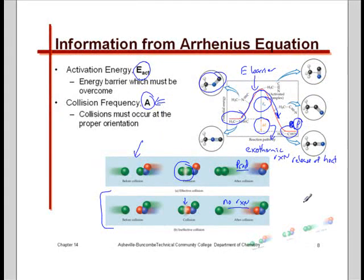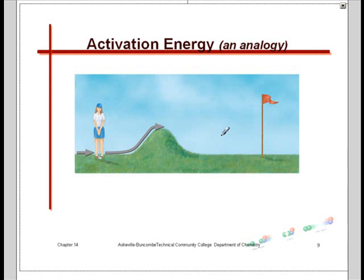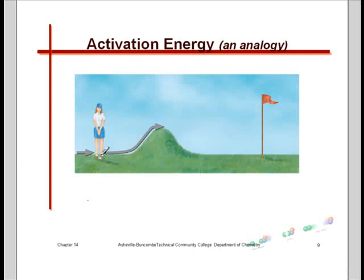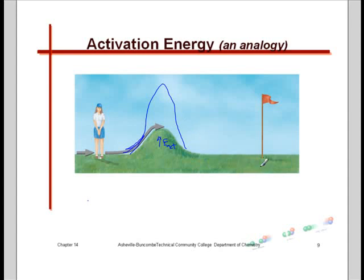A simple analogy from the book: a golfer needs to hit the golf ball at a certain velocity to make it over the bump to get onto the green. This represents the energy barrier — the activation energy that must be acquired through the swing. If the hill were bigger, she'd have to strike the ball harder. That works pretty well as an analogy for activation energy.